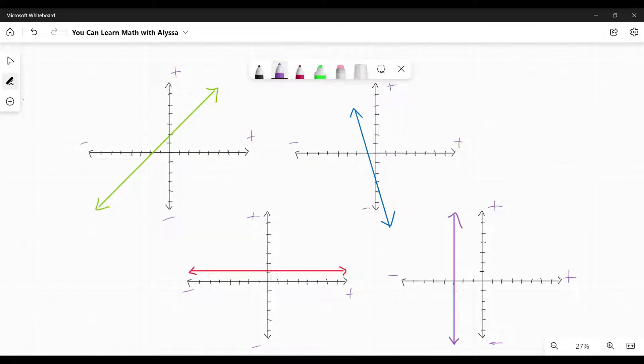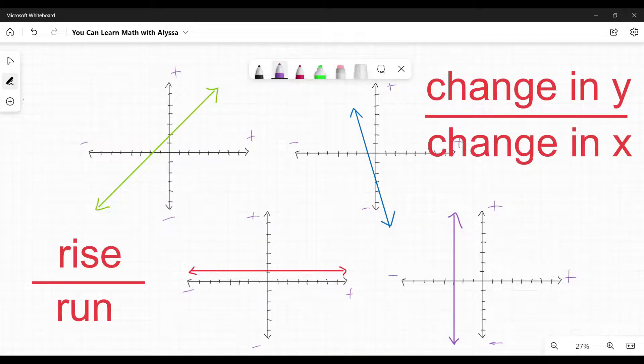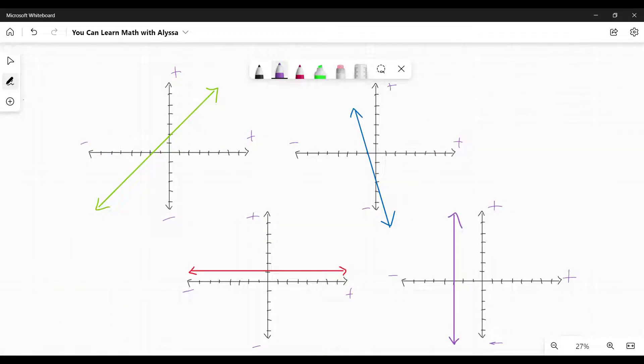Slope is a measure of the incline of a line, most commonly defined as rise over run or change in y over change in x. If we're looking at the graph of a line, we want to see how far it goes up or down and divide that by how far it goes left or right between two points.